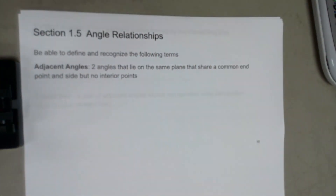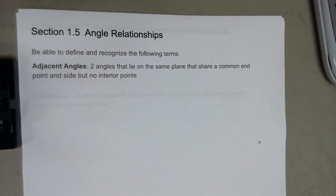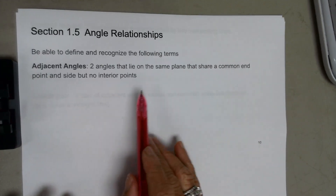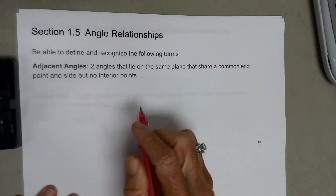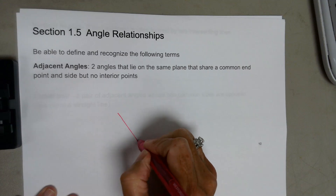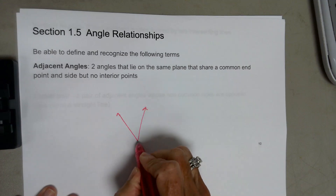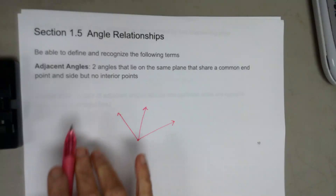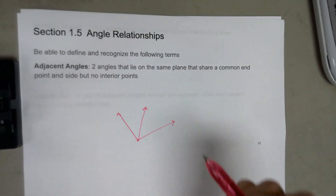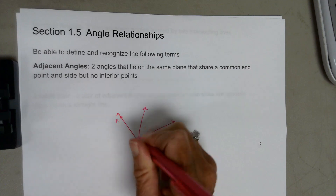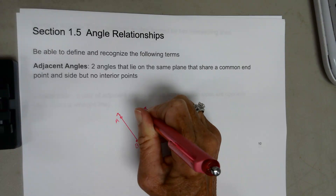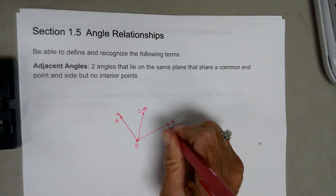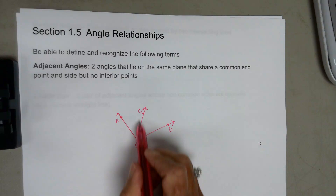Section 15 is about angle relationships. You need to define and recognize these terms. Adjacent angles are two angles that lie on the same plane, share a common endpoint and a common side, but have no interior points in common. Angle ABC would be adjacent to angle CBD — they share a common endpoint and a common side.